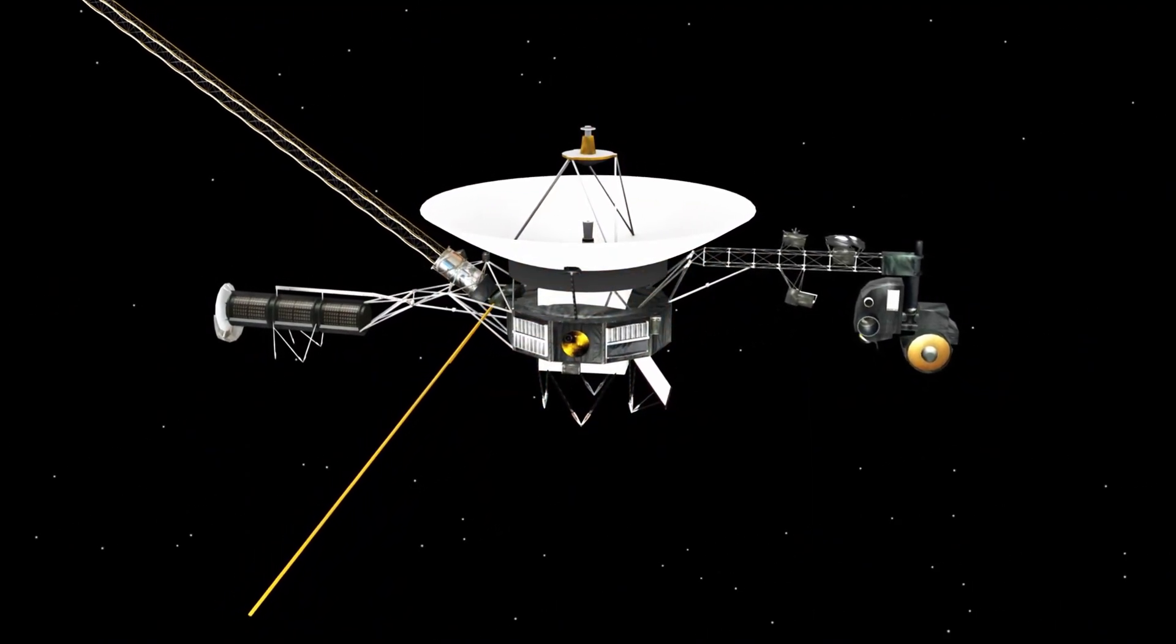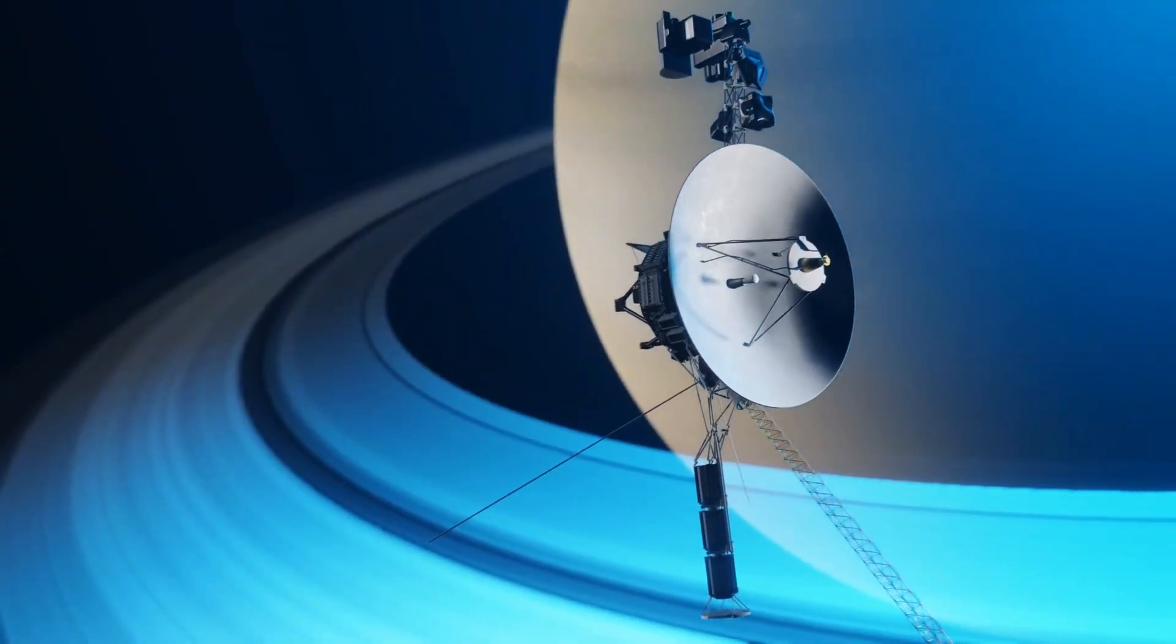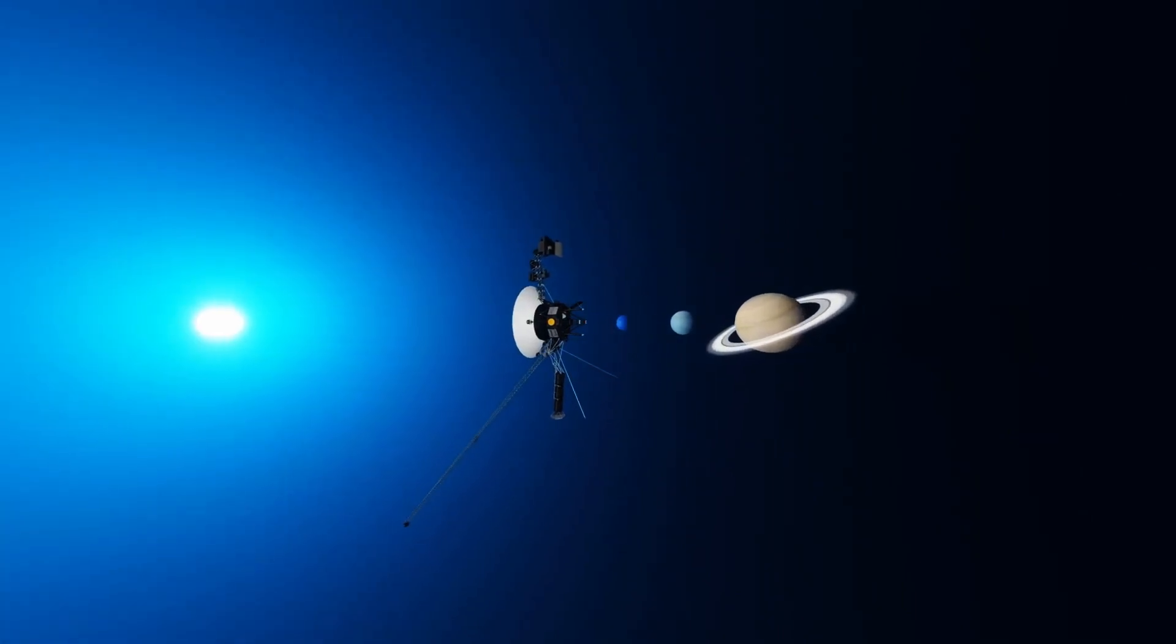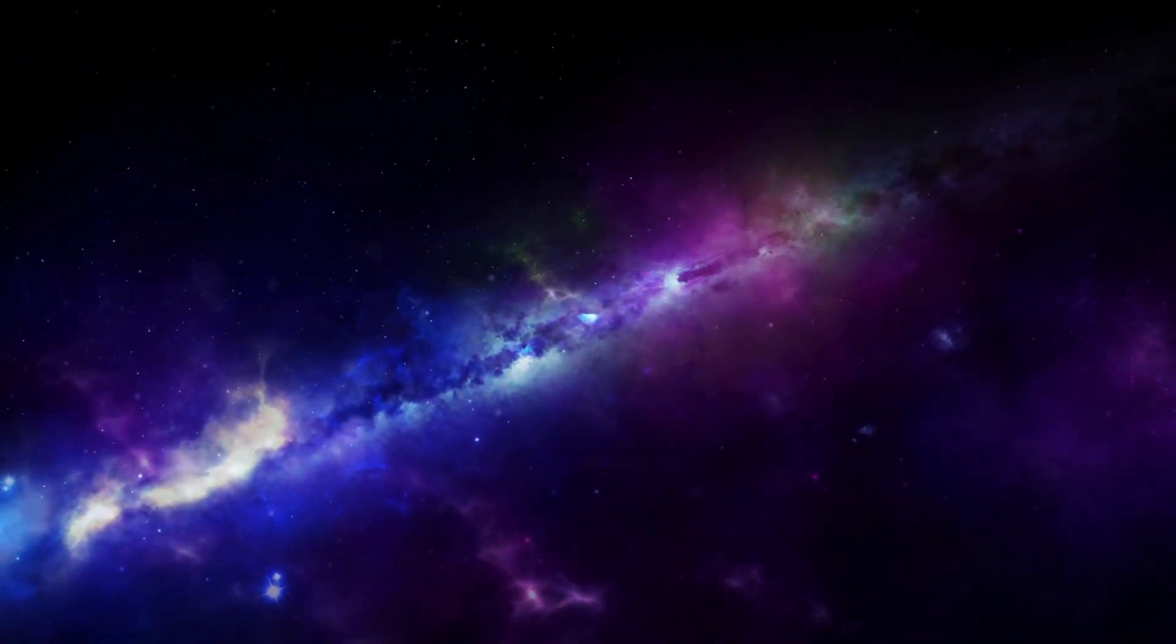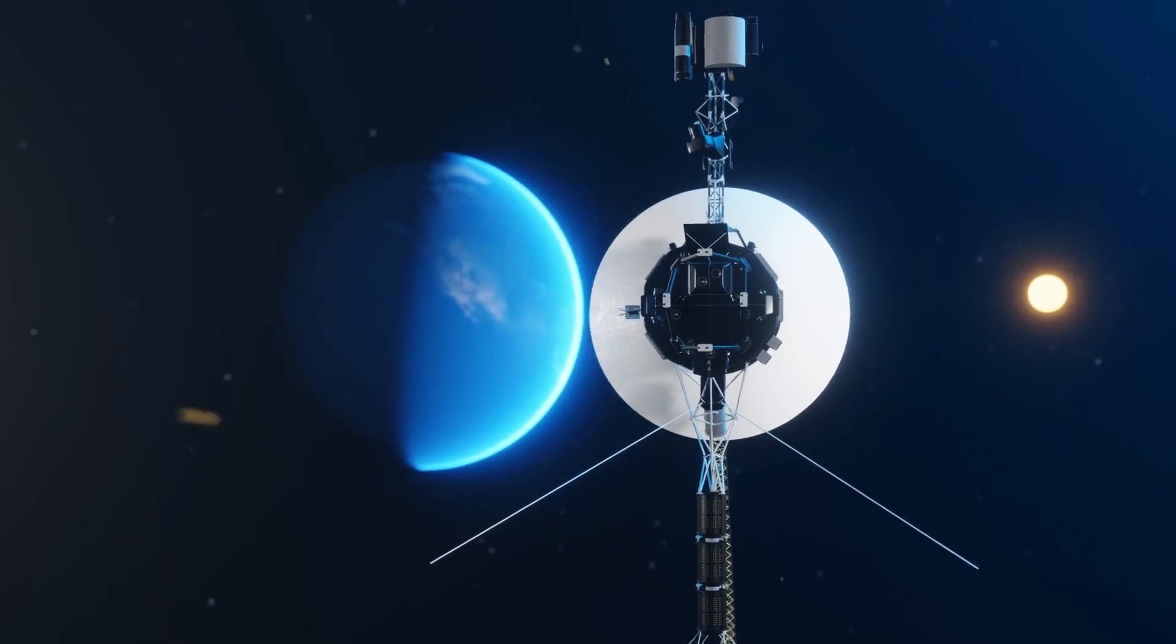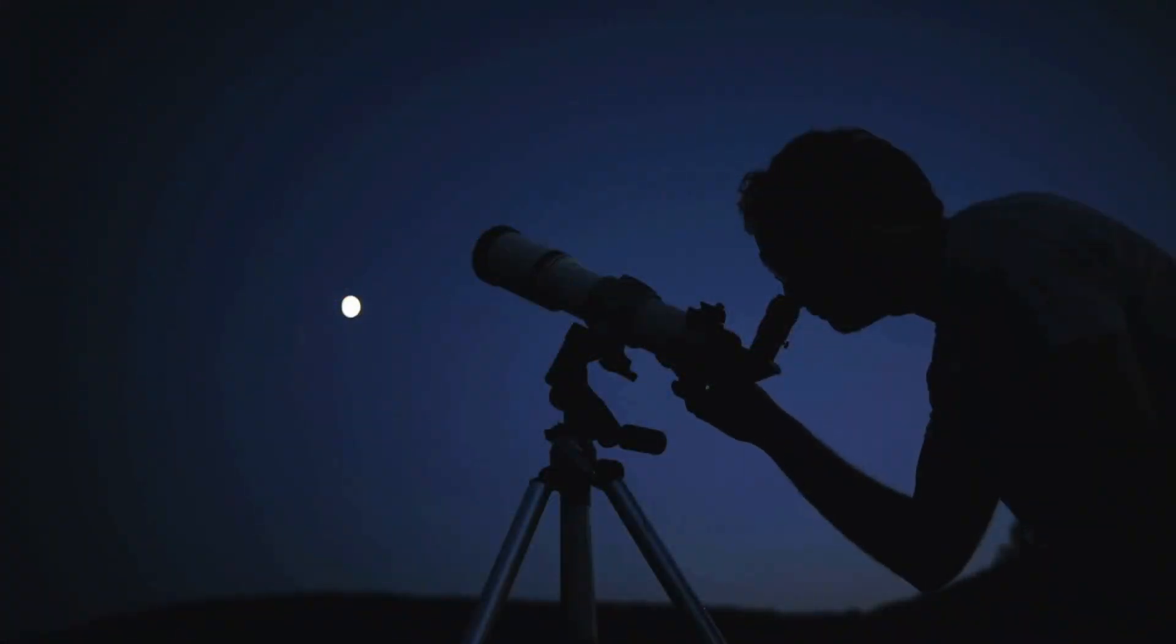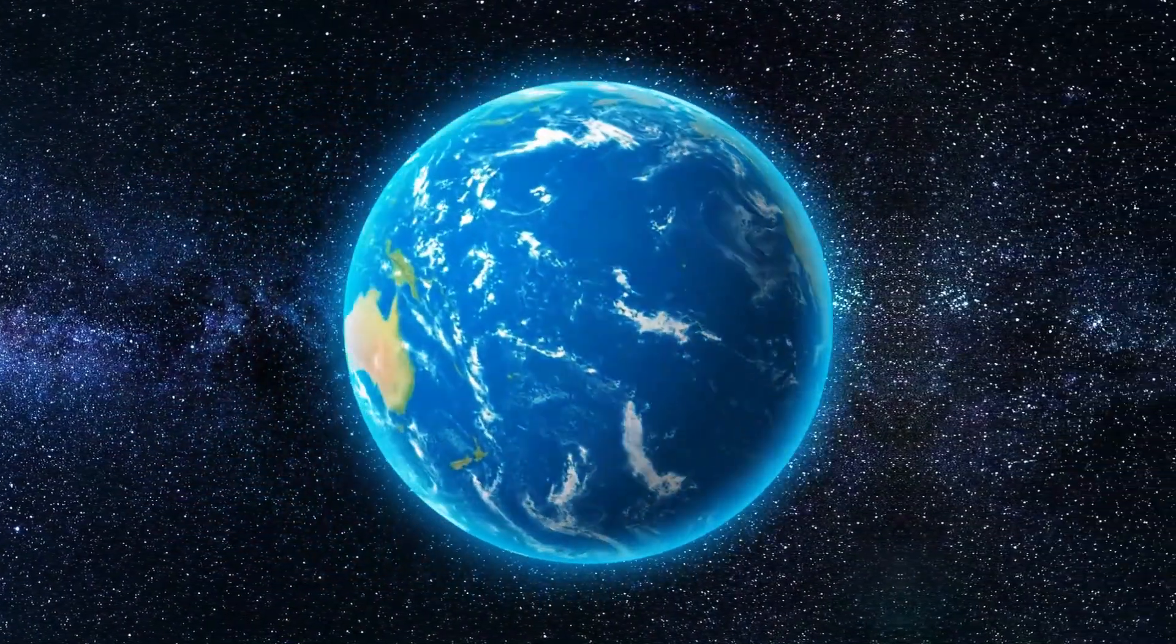Perhaps the most iconic image captured by the Voyagers wasn't of a distant planet or a mysterious moon, but of Earth itself. In 1990, as Voyager 1 ventured beyond the solar system, it turned its camera back toward home and captured the pale blue dot, a photograph that would forever redefine our place in the universe. Taken from over 4 billion miles away, the image showed Earth as a mere 0.12 pixels in size, floating in the vast emptiness of space. This humbling snapshot reminded humanity of our fragility and insignificance in the grand cosmic tapestry. The image inspired countless people, including renowned astronomer Carl Sagan, who reflected on Earth's vulnerability and the unity it demands from all who call it home.